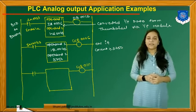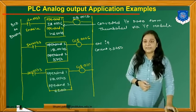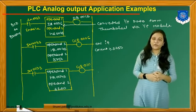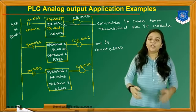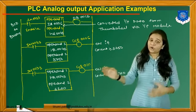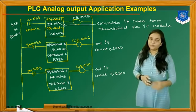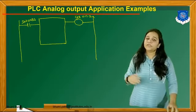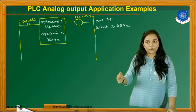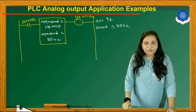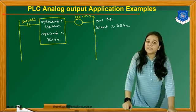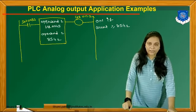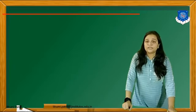Next, we again use the greater-than-or-equal-to function with input IN0033. Operand 1 is HR0045 and operand 2 is 6200 — ON if count is greater than or equal to 6200. A third greater-than-or-equal-to function uses operand 1 as HR0045 and operand 2 as 8542 — ON if count is greater than or equal to 8542.